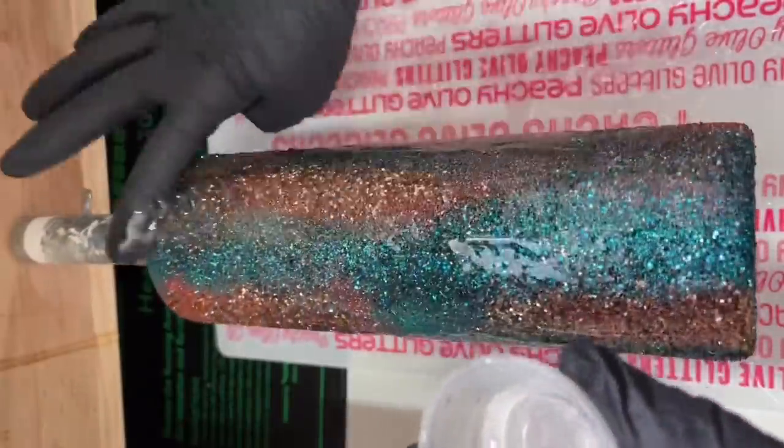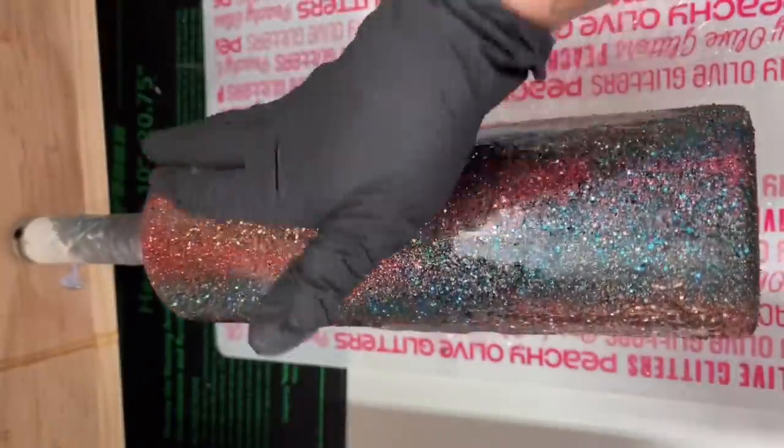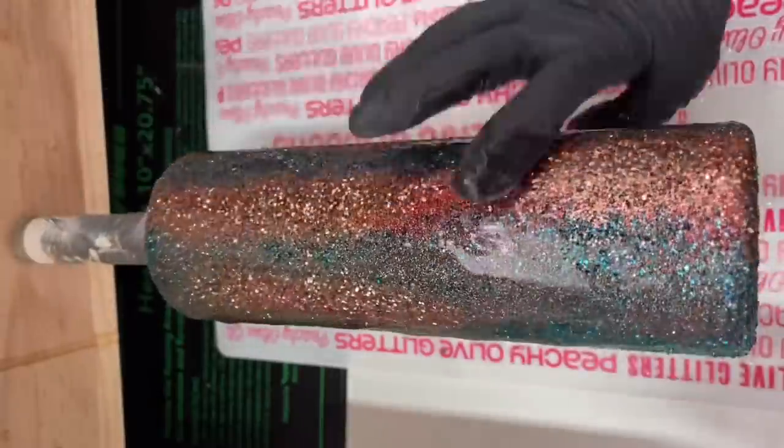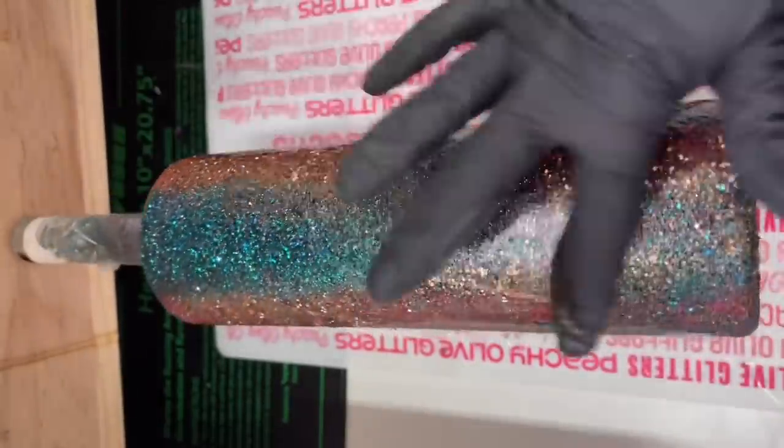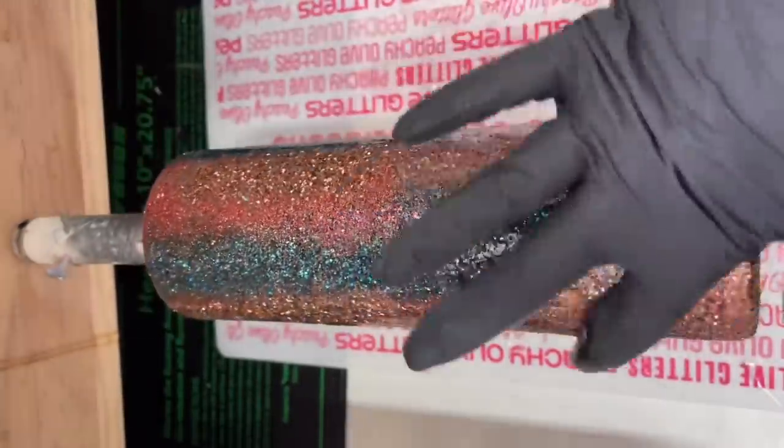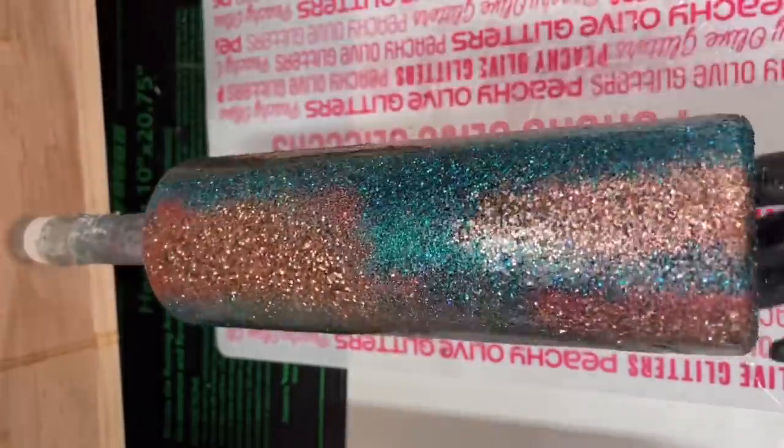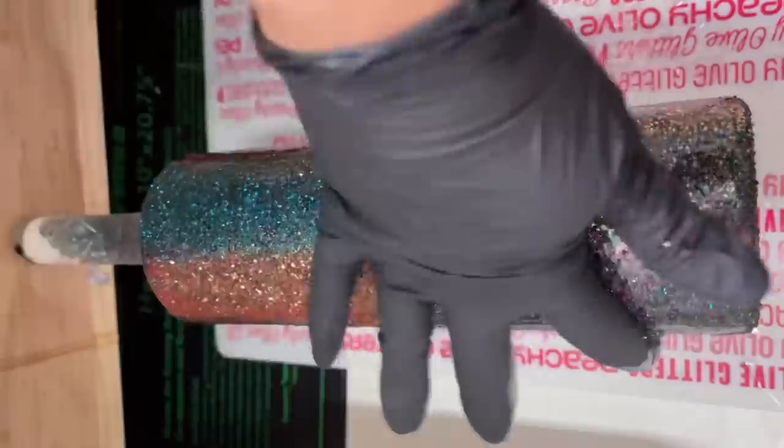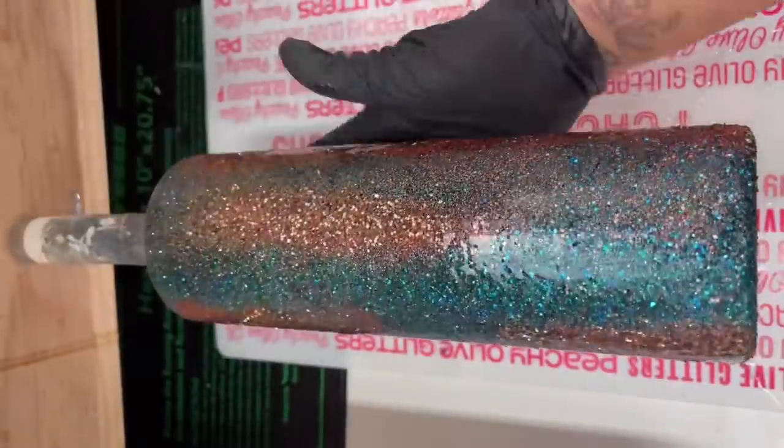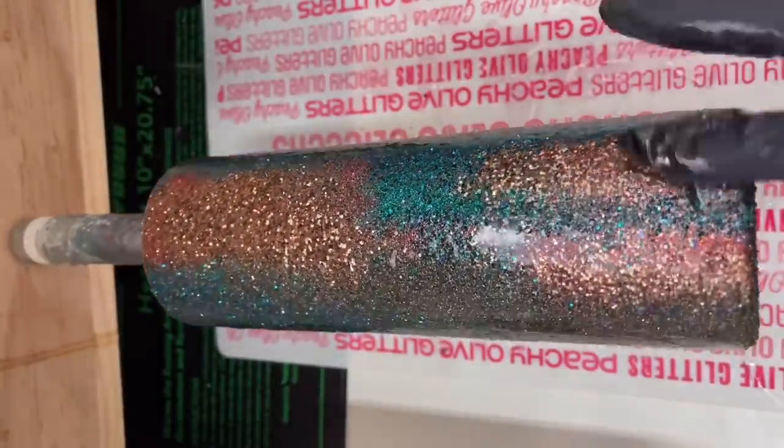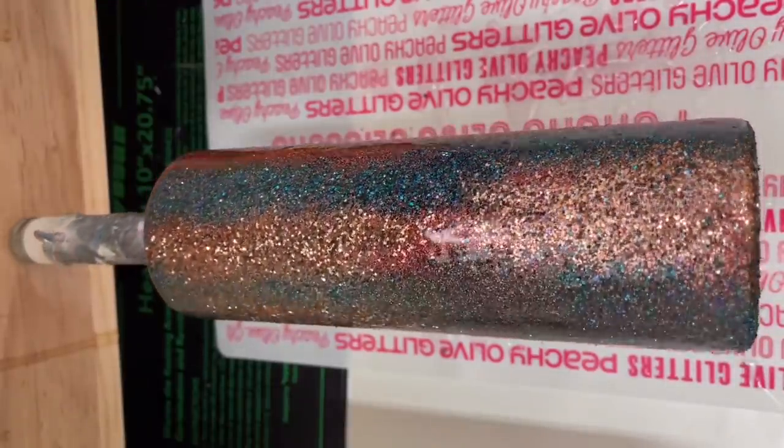For my first coat of epoxy, I used 30 milliliters of Alumilite's Amazing Quick Coat. This is a fast-drying epoxy, so I only had to wait about two to three hours before I was ready to apply a second coat. I applied a second coat with almost 30 milliliters of epoxy right over this, and I let that second coat dry for at least four to six hours before we moved on to the next step.